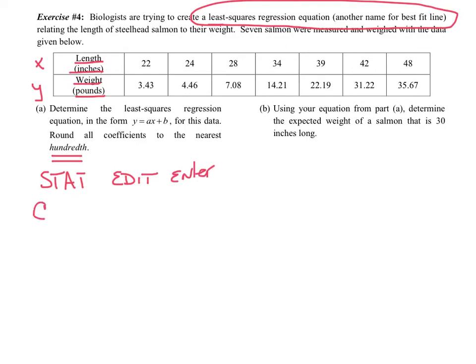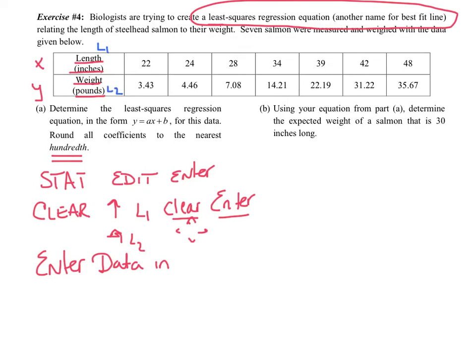All right, this time everybody has to clear out their information. So, you're going to arrow up to L1, wherever you entered it. You are pressing clear and enter. That should clear out all of L1. Clear is underneath the four arrow keys. Okay, you'll find the word clear and enter. Then, you're going to do the same thing. Go over to L2, hit clear and enter. Clear it out. Once it's cleared out, enter data in. Remember, this first column is always L1. The second column is always L2, or row is always L2.